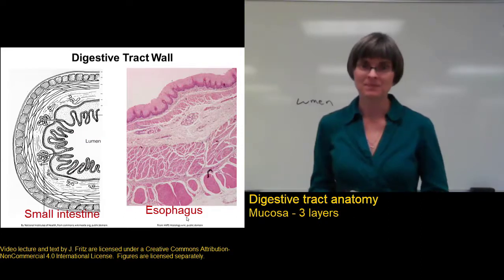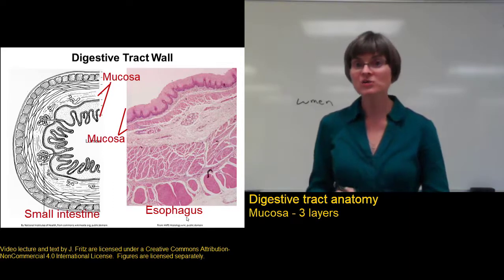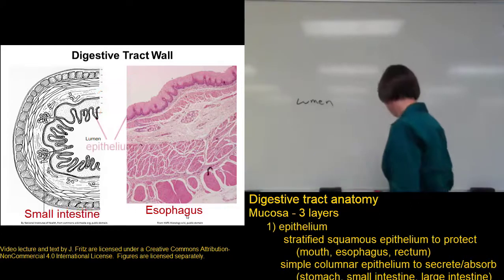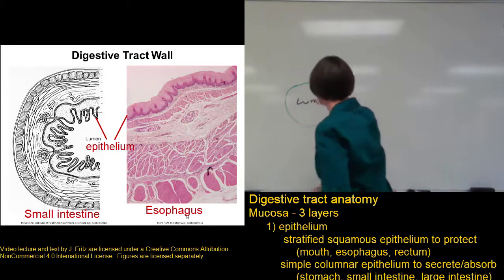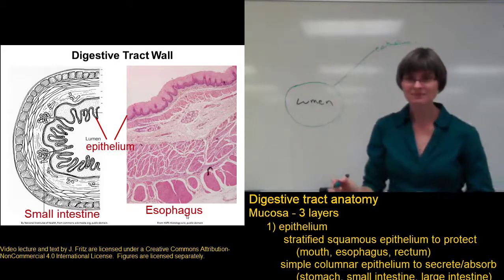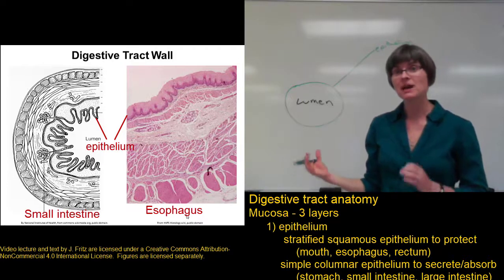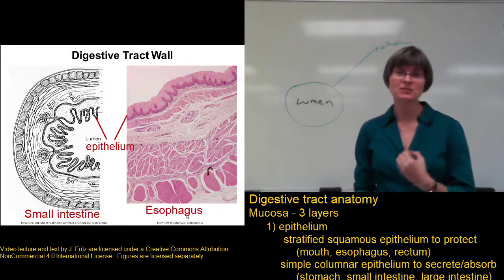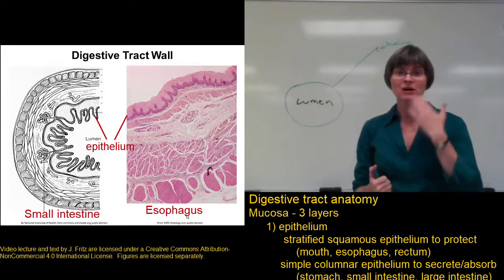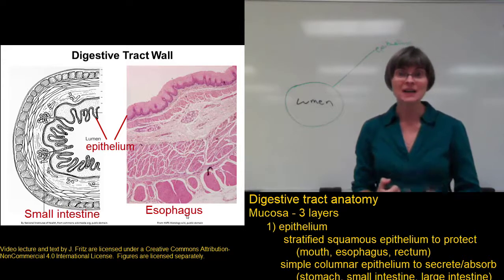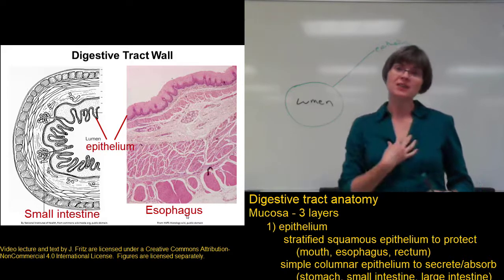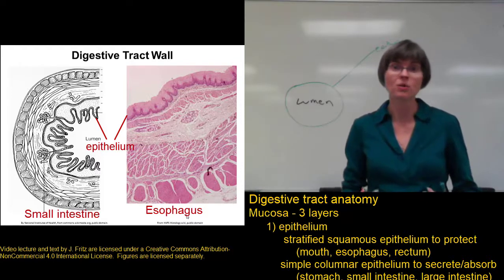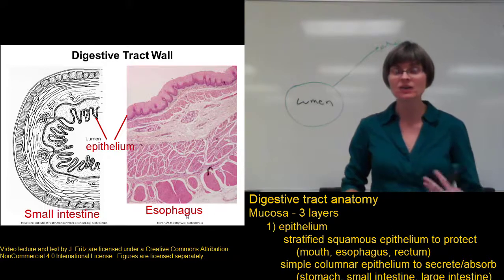The innermost layer of the digestive tract wall is called the mucosa, and the mucosa is actually made up of three different layers of tissue. The innermost layer is a layer of epithelium. The epithelium varies depending on which organ we're looking at. In the mouth and the esophagus, we have stratified squamous epithelium, because these areas have a large amount of friction with the food rubbing down them and they need the protection of many layers of cells. In areas like the stomach, small intestine, and large intestine — where secretion of enzymes and absorption of nutrients is more important — we find simple columnar epithelium, or a single layer of tall cells.